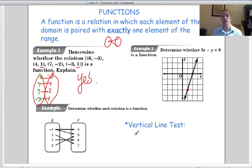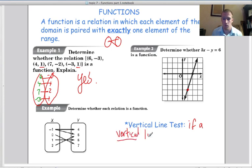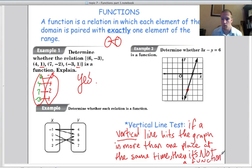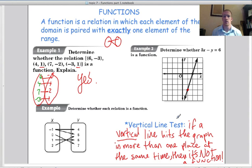So that's what our vertical line test, that's how we test using a graph. Vertical line test says that if a vertical line hits the graph in more than one place, then it is not a function. So you may want to pause and copy this down. All right, so there's our vertical line test.